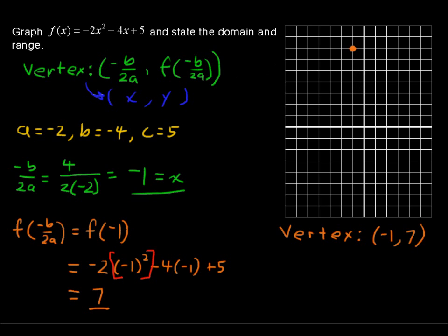Note that this a value is -2, this leading coefficient is negative. And when the leading coefficient is negative, or when a is negative, that means the parabola will open downward. So it'll look something like this. This is going to be a rough sketch.